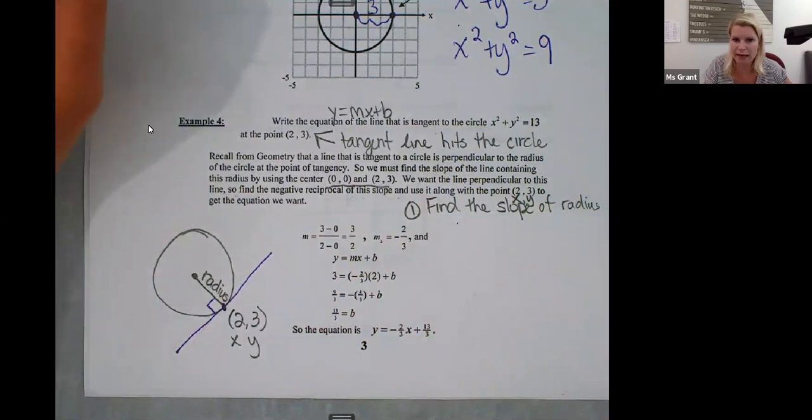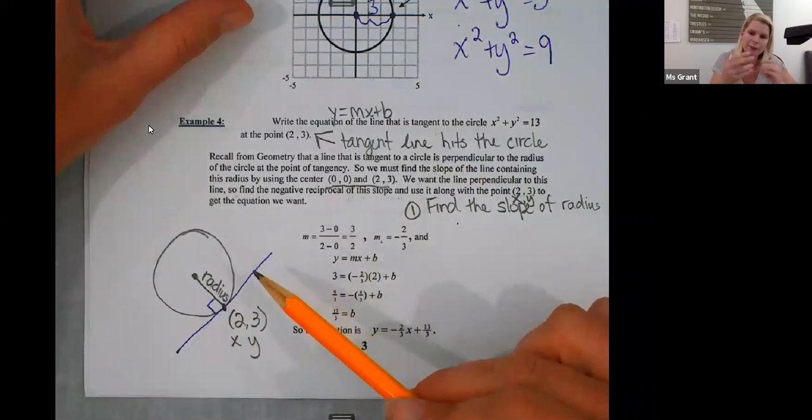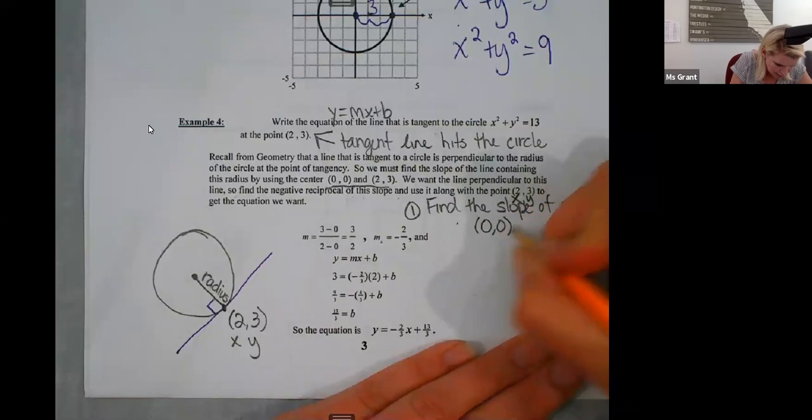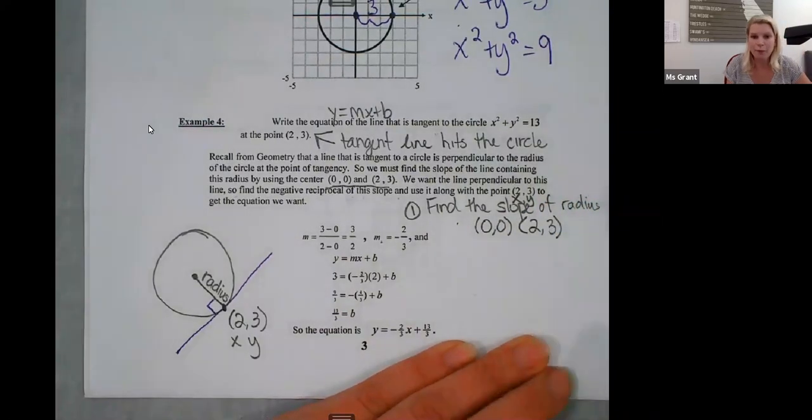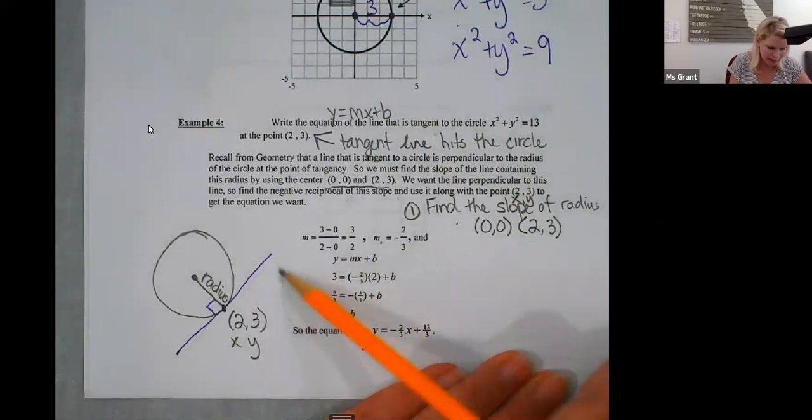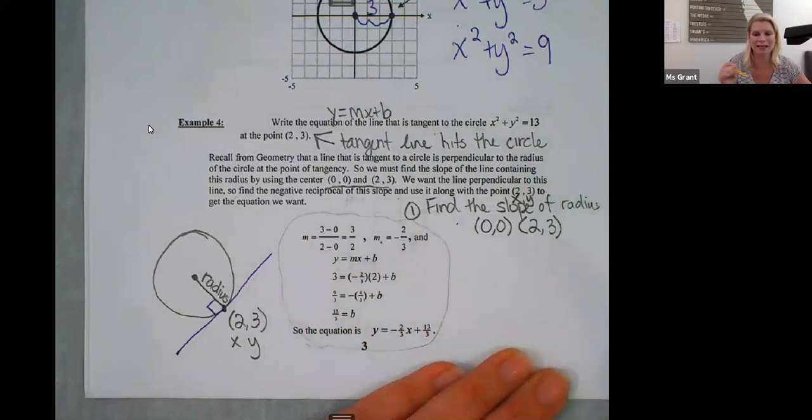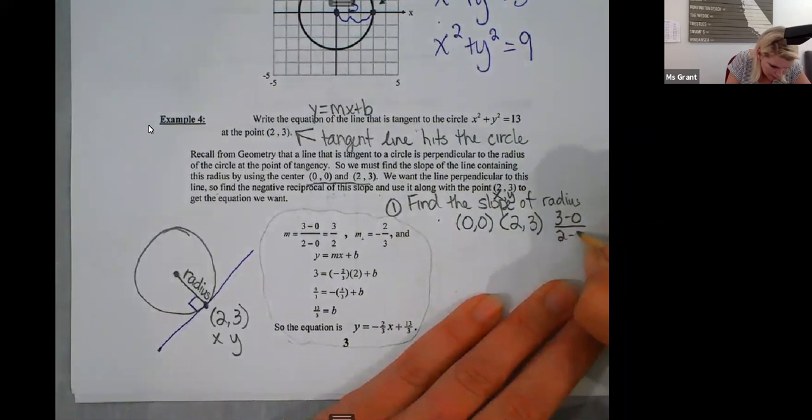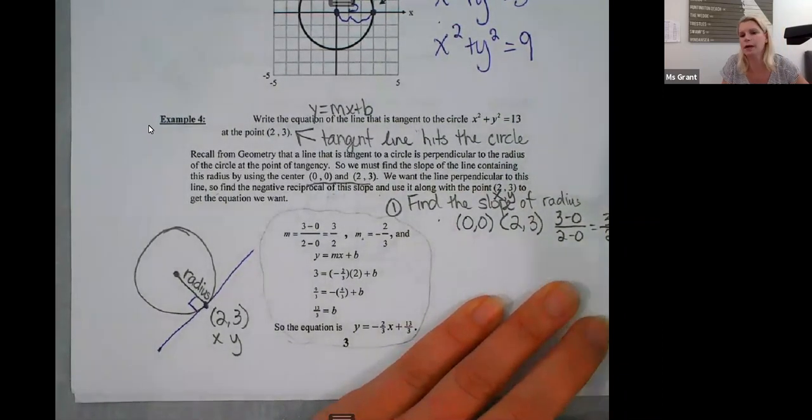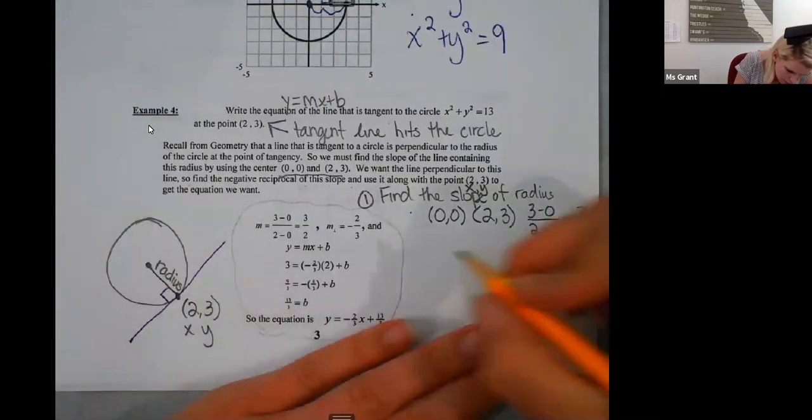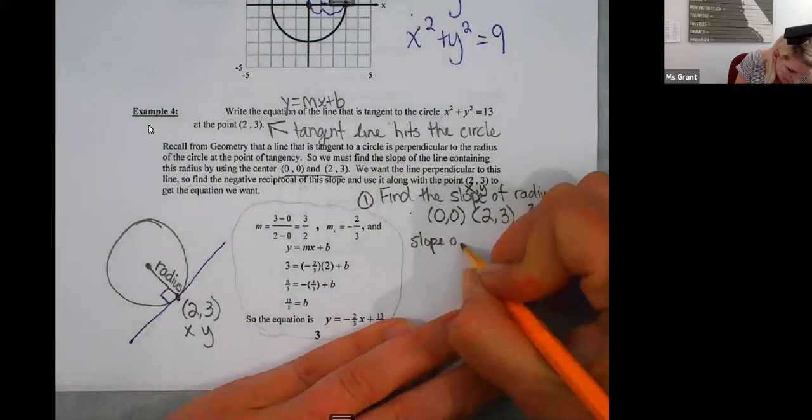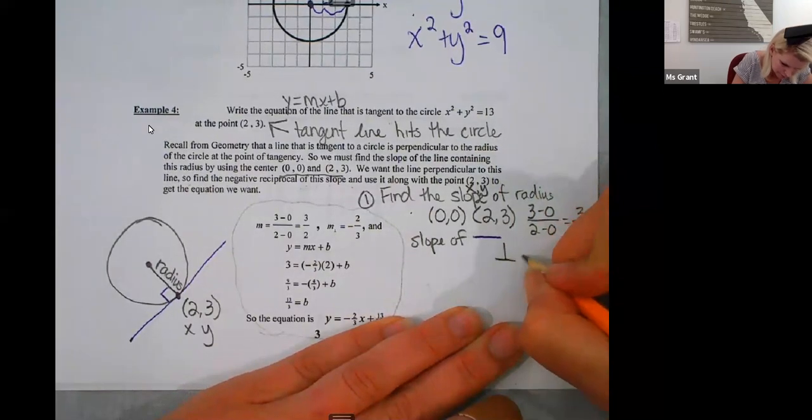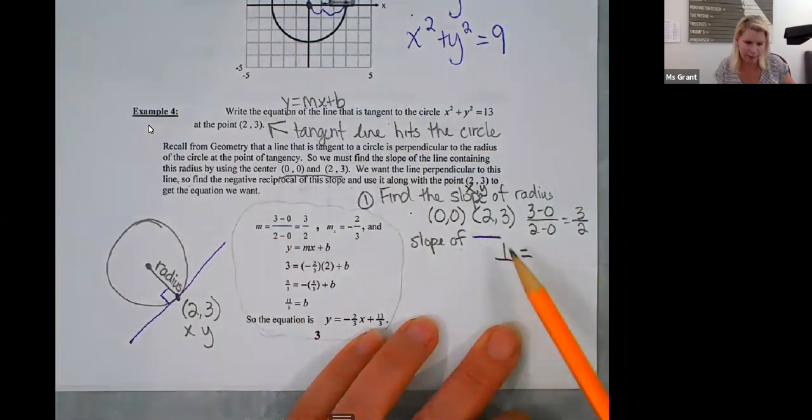I need to find the slope of this radius. Because if I want to find the slope of the purple line, they're opposite reciprocals. You know, here's the two ordered pairs for the slope of the line. 0, 0 and 2 comma 3. By the way, everything I'm writing is typed out right here. I'm just writing it again because I think it's important for me to clarify. 3 minus 0 over 2 minus 0. This is the slope of my radius, 3 halves. 3 halves.